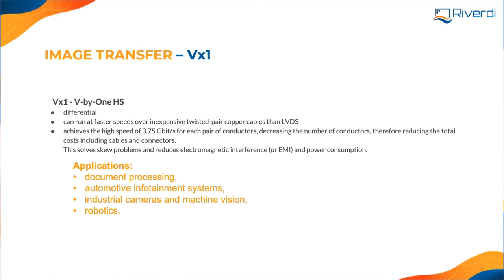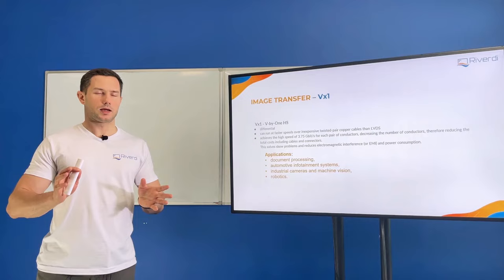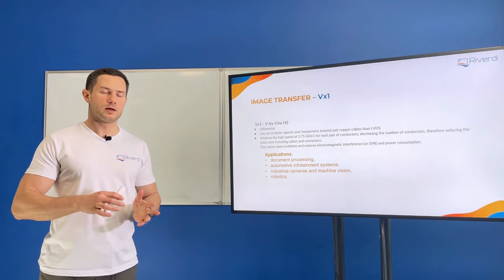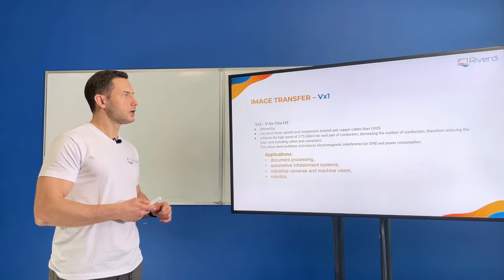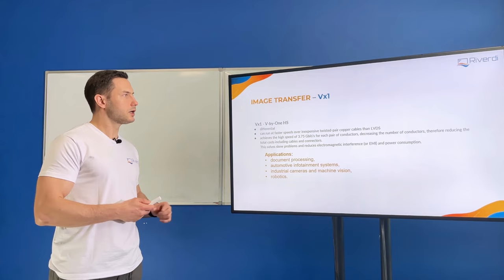Next is V-by-One — it's not very common, but it is a very high-speed interface, also an LVDS-type differential interface. V-by-One is usually used in high-resolution large screens. For example, a 55-inch or larger 4K TV you buy today probably uses V-by-One as its embedded internal interface. V-by-One is a very fast interface for high bandwidth — supporting high refresh rates and high resolution displays, typically 4K and above.